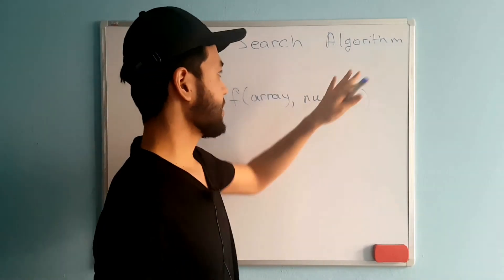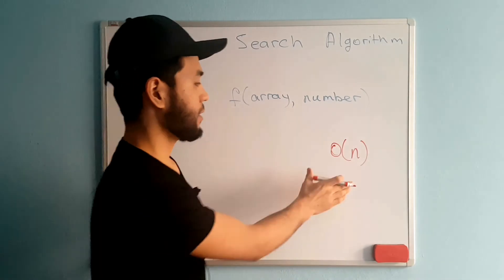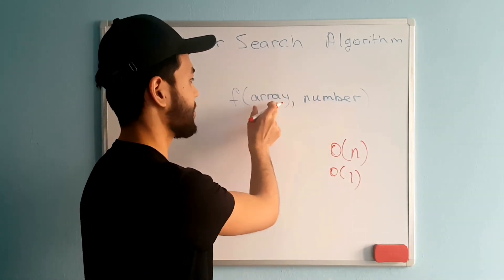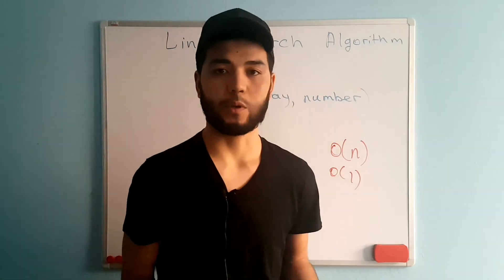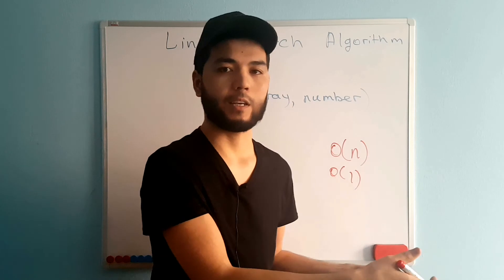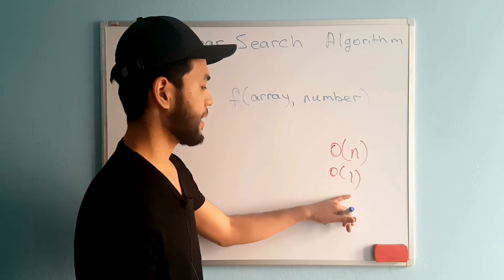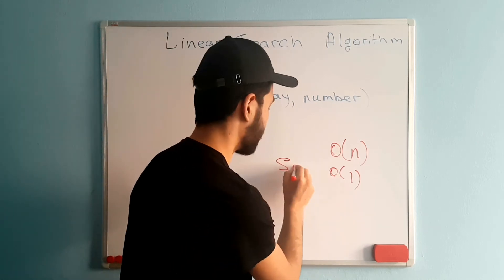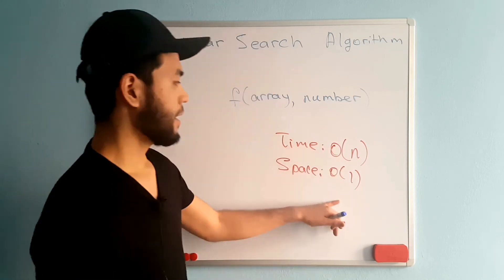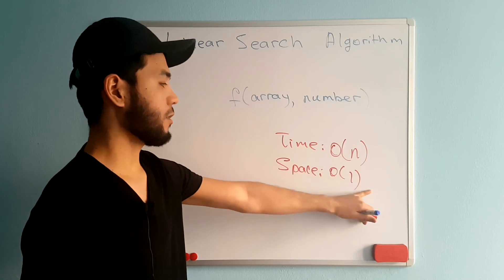For the linear search algorithm, the time complexity is O(n) — which is linear. The space complexity is O(1) — constant — because we are not using any extra memory, not storing the array or creating a new one. We are just iterating and checking, so space complexity is constant O(1) and time complexity is linear O(n).